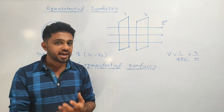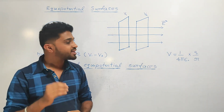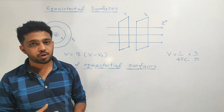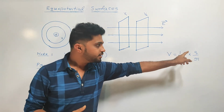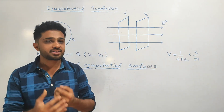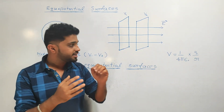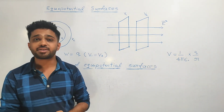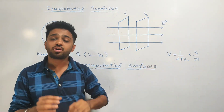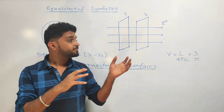This equation will be derived in the last class. V is equal to 1 upon 4 pi epsilon naught, into Q divided by r. Here r is the distance, Q is the charge, and 1 upon 4 pi epsilon naught is a constant.